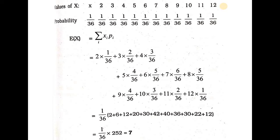The probabilities are: sum 2 has 1/36, sum 3 has 2/36, sum 4 has 3/36, and so on.